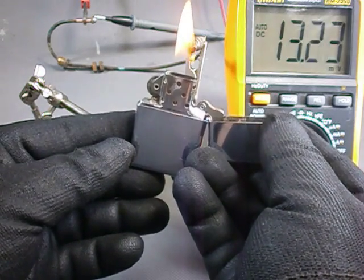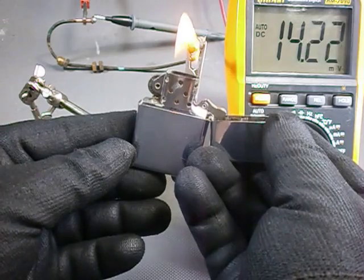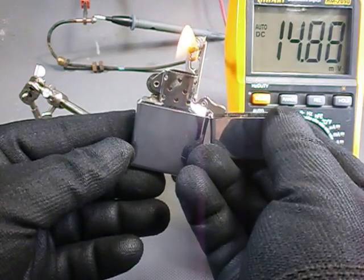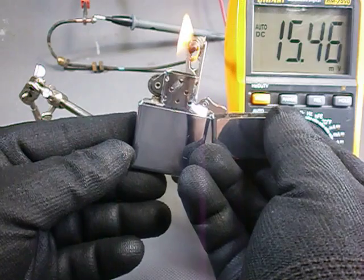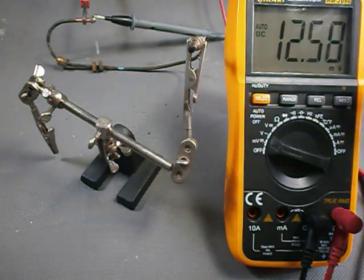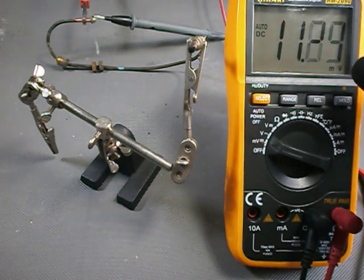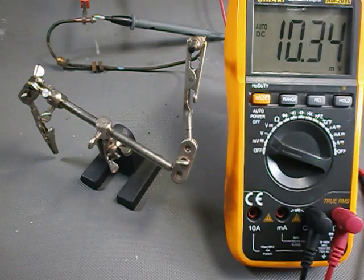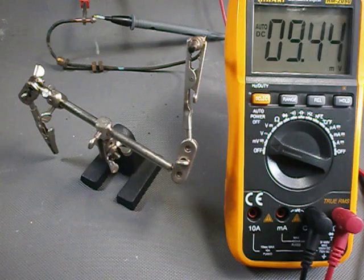After around 15 or 20 seconds it stabilizes around 15 millivolts. After we remove the flame the voltage starts to decrease also instantaneously. It takes more than one minute for the voltage to go under one millivolt. Well it seems that our thermocouple is okay.